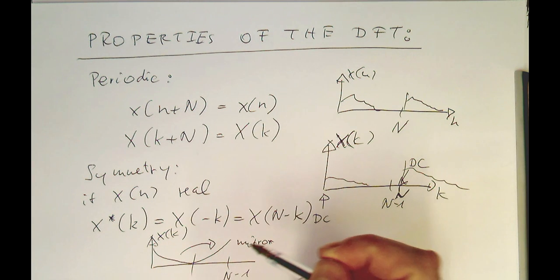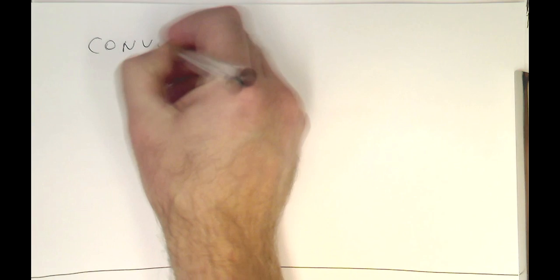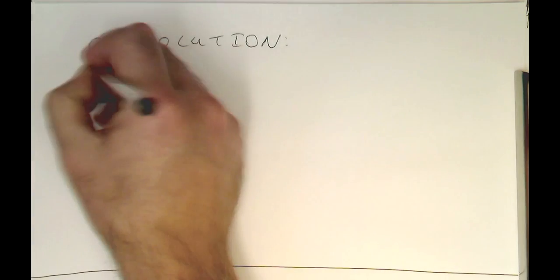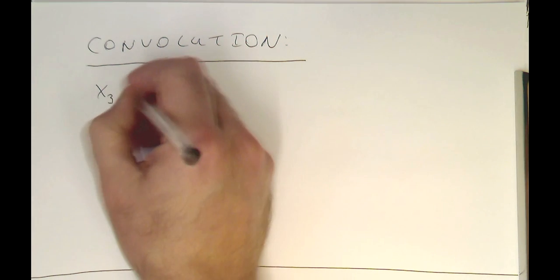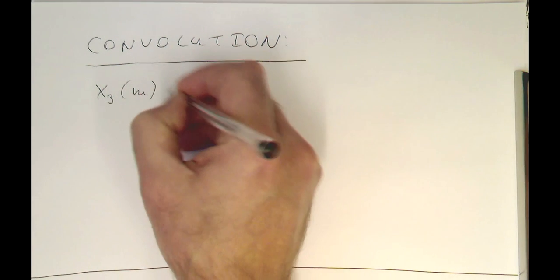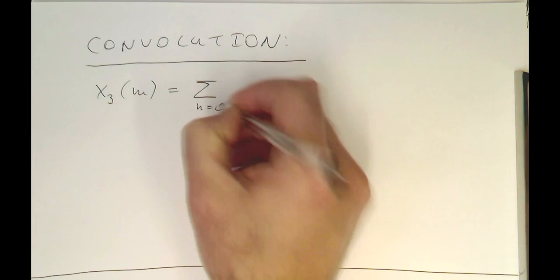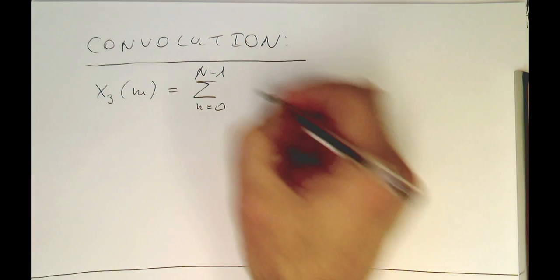Okay, so then, the last bit is convolution. Convolution is defined in the sample domain here as a sum. Remember, usually this would be an integral. We are running this just through our number of samples here.